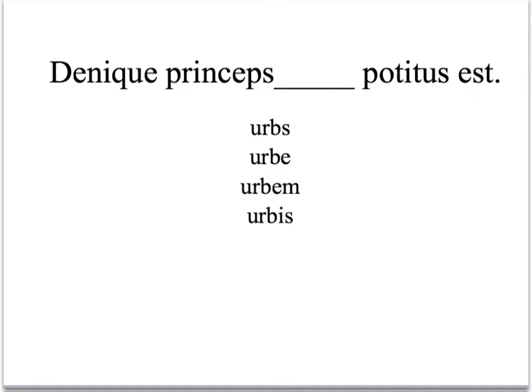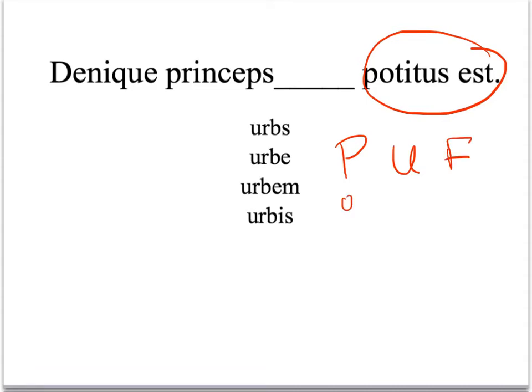Here's another example: 'Denique princeps blank potitus est.' They're trying to trick us with a different form of potior. Remember, it's one of our PUFF words — potior, utor, and frior. Feel free to look up the dictionary entries of these verbs if you didn't recognize potitus est as a form of potior. And the ablative, of course, is erbe.